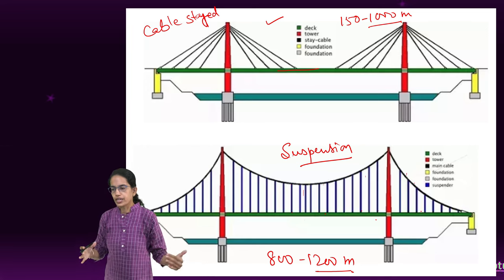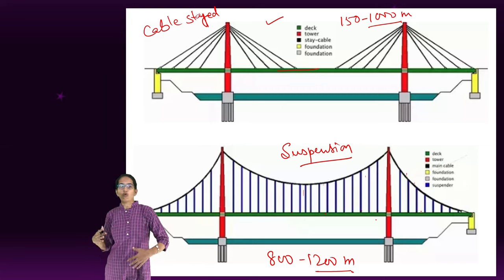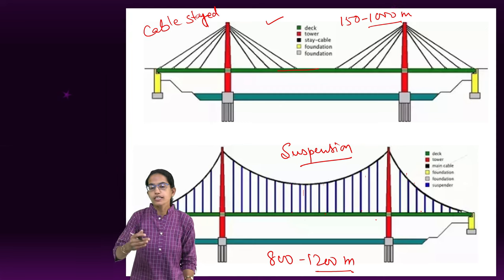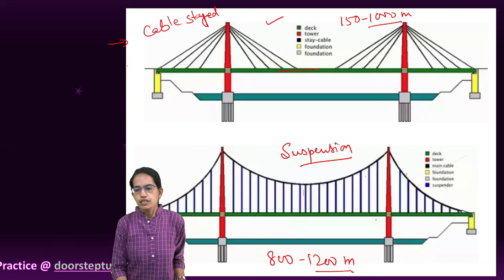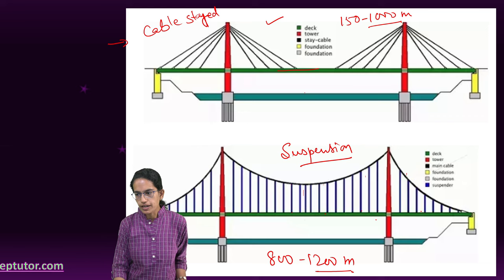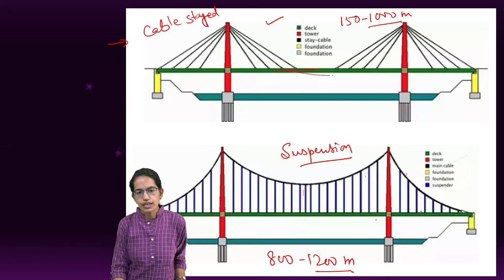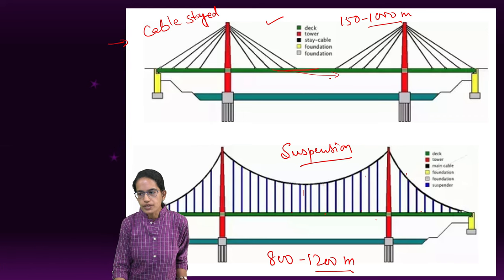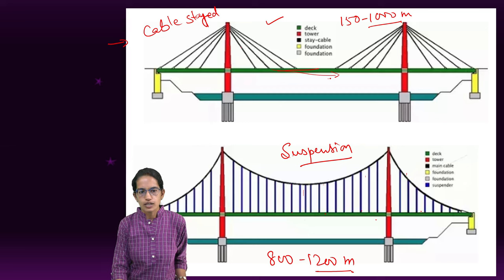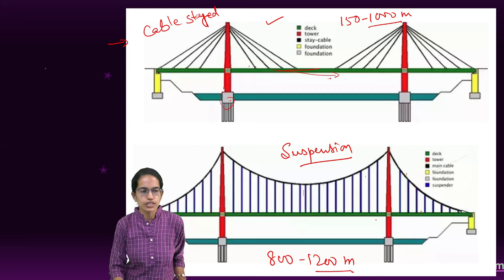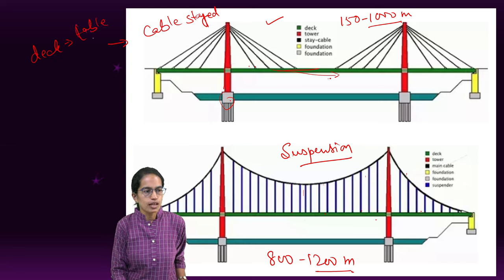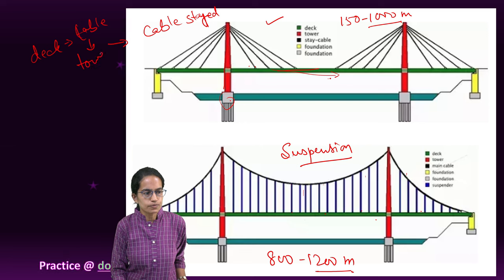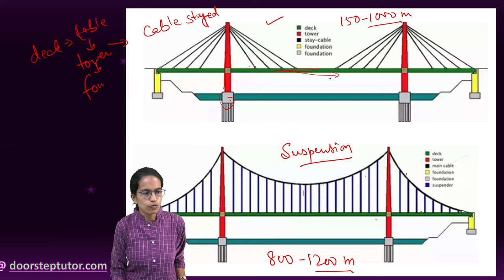Now, let's say when a vehicle runs over the bridge, what would happen? Where would the load transmission take place? In the case of cable-stayed bridge, the first transmission would occur at the deck. From the deck it would go to the cable, from the cable to the tower, and finally to the foundation.